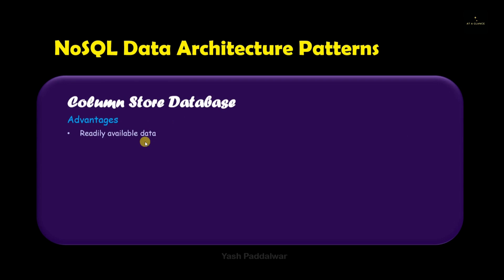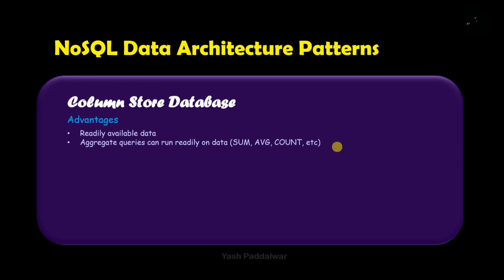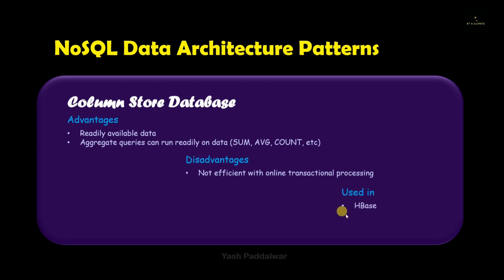Now let's have a look at the advantages. The first advantage is that the data is readily available. Like in RDBMS, we have all the data in a structured format, so we can perform all aggregate operations — for example, sum, average, count, etc. — because the data is readily available. The disadvantage is that it is not efficient with online transactional processing (OLTP) because it is highly made and used for online analytical processing (OLAP). This column store database is used in databases like HBase, which is an Apache product, and also in Cassandra, which is yet another popular database.